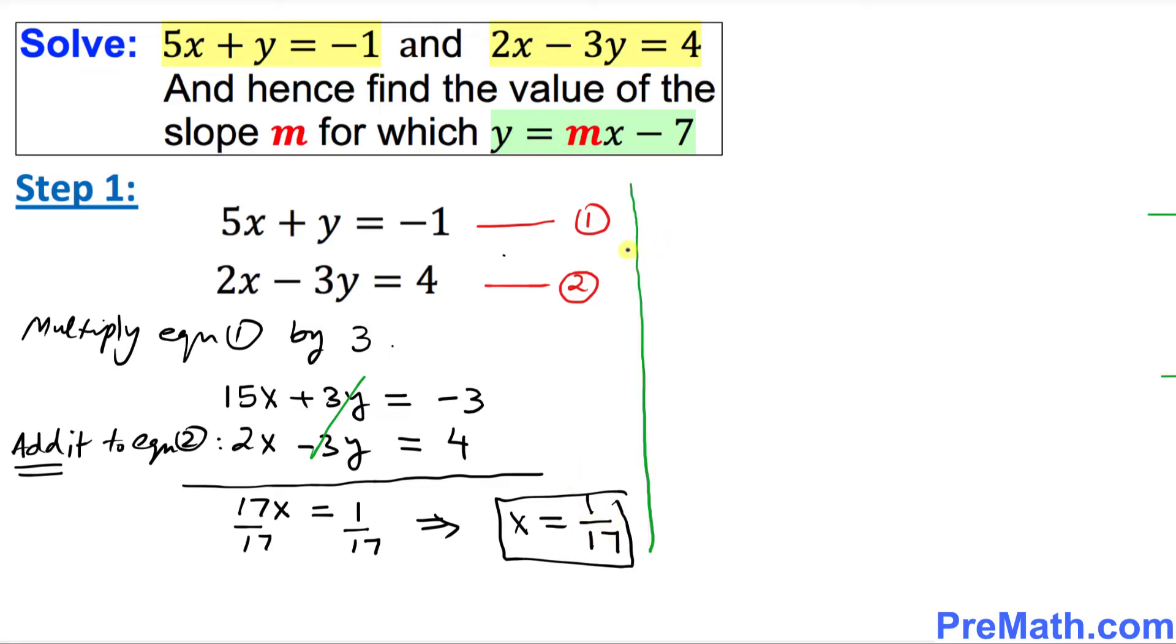And now in the next step we are going to find the value of y. So I am going to say put this x equals 1 over 17 value in equation number 1. And here is our equation number 1, so wherever you see x I am going to replace it by 1 over 17.